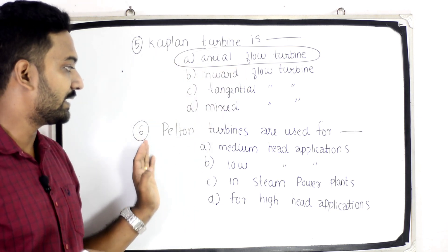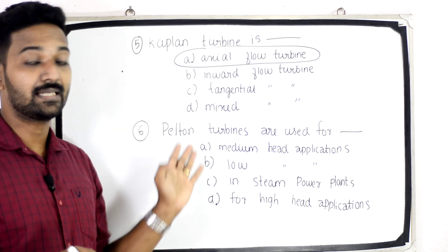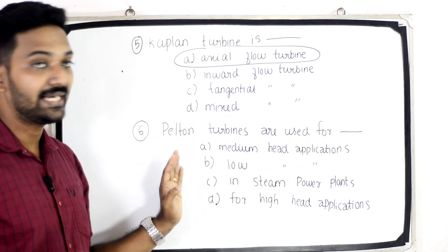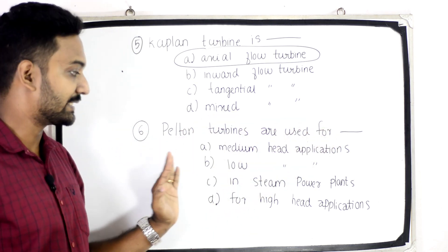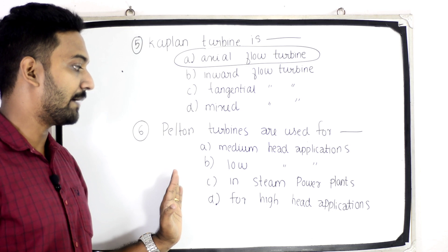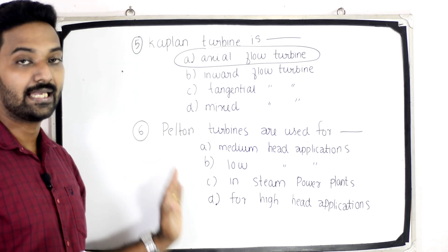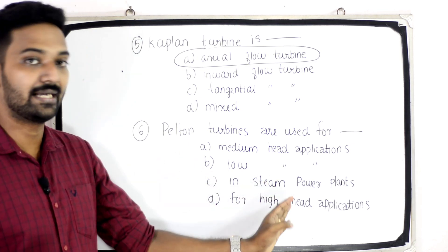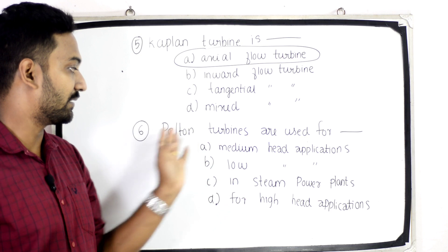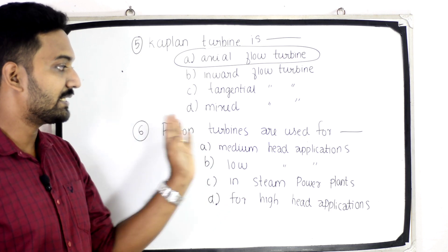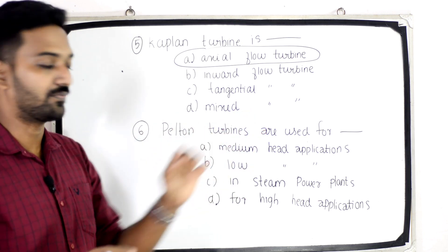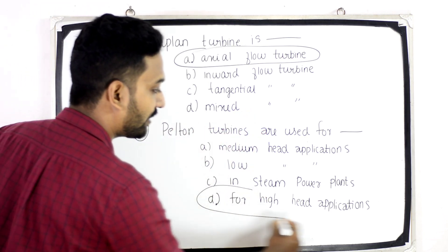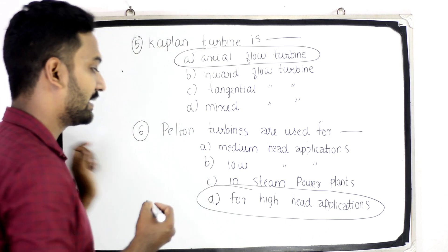Sixth question. Pelton turbines are used for — Option A: Medium head application. Option B: Low head application. Option C: In steam power plants. Option D: High head application. Answer: Pelton turbines are used for High head application.